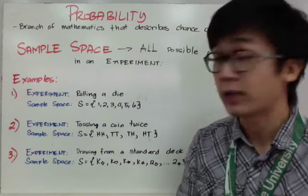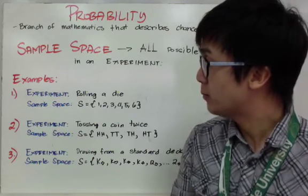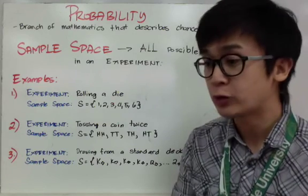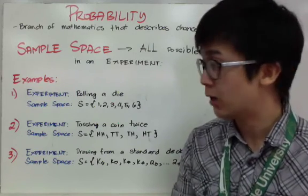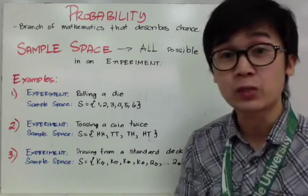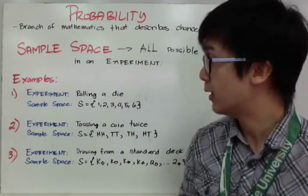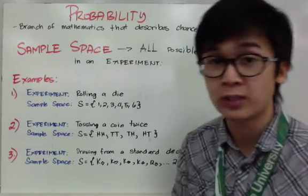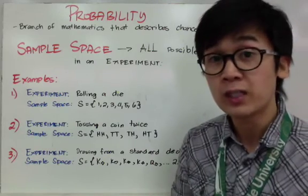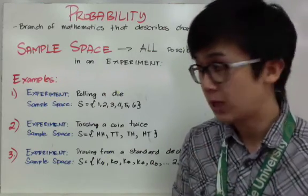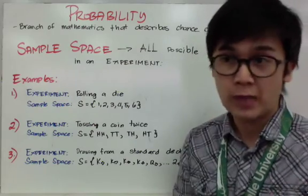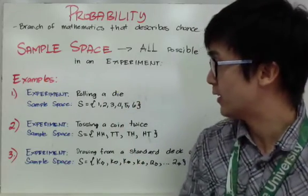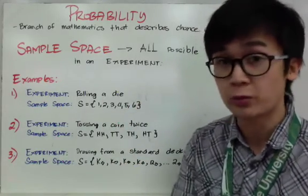The first example is rolling a die. In this probability concept, sample space is very important and you should be familiar with the tools used in probability problems, like a die. If you're not familiar with a die, you're probably not going to be able to answer probability questions involving one. A die is a cube with six dots, and the sample space for a die is one through six.